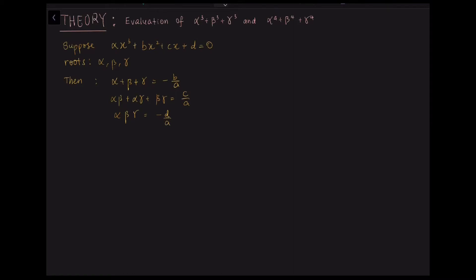Also, we have learned that the identity for the summation of α², which is α²+β²+γ², equals (α+β+γ)² minus 2(αβ+αγ+βγ). We are now in a position to find α³+β³+γ³ and α⁴+β⁴+γ⁴.